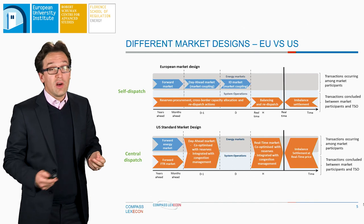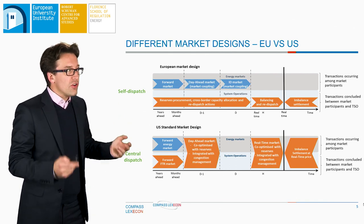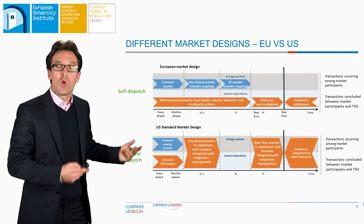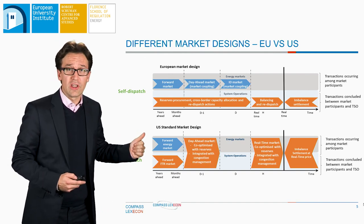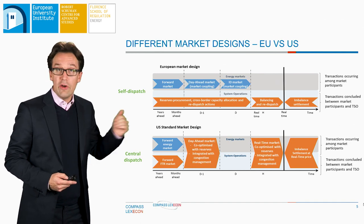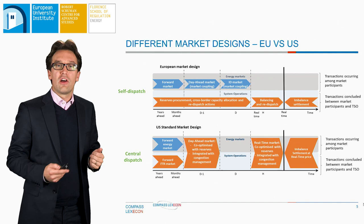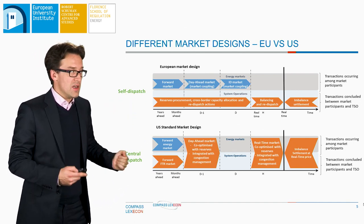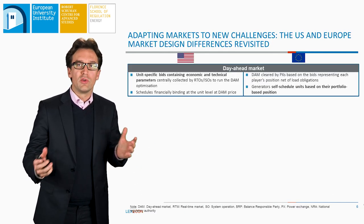To conclude, it's worth emphasizing that the designs in Europe and the US are not the same. In blue, you see transactions occurring among market participants; in orange, transactions concluded between market participants and the system operator or the TSO in Europe. In Europe, we have self-dispatch in most markets, whilst in the US you have centralized dispatch. The main market in Europe is the day-ahead market, and we have a concept of balancing responsible parties which decentralize the obligation of balancing to the parties. In the US, in contrast, you have co-optimization first on the day-ahead, and then for the real-time markets as well, with co-optimization with reserves.